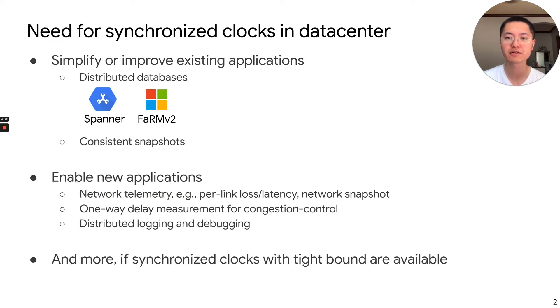Synchronized clocks are very useful in data centers. They can greatly simplify or improve existing applications, such as distributed databases and getting consistent snapshots. There are many famous examples such as Spanner from Google and Farm from Microsoft. They can also enable new applications such as network telemetry, measuring one-way delay, and distributed logging and debugging. We believe there will be more applications if we really have synchronized clocks that can tightly bound the precision.